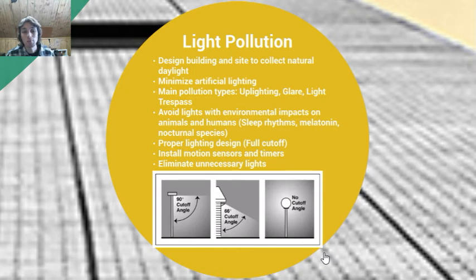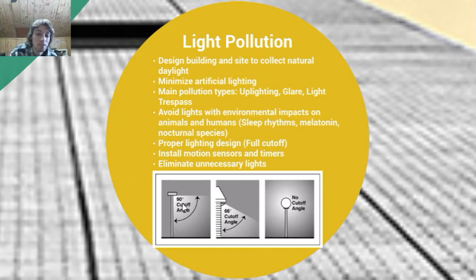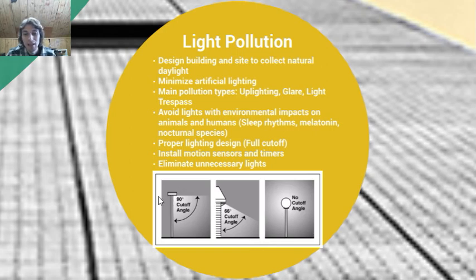Trespass is basically light going where it's not supposed to. Glare we're all familiar with if we've ever ridden in a car. Uplighting is what you see in the picture on the right — the streetlight with no cutoff angle where light is going every which way. We don't want that. We want light going where it's supposed to, such as in the picture to the left — a square, full cutoff design where light goes straight to the ground or a little bit to the side. This is the design we want to see.